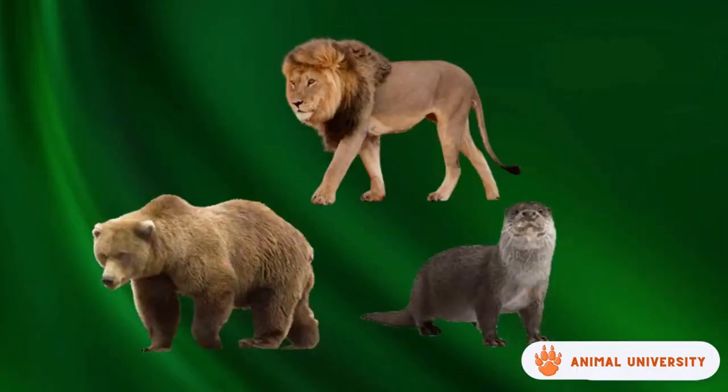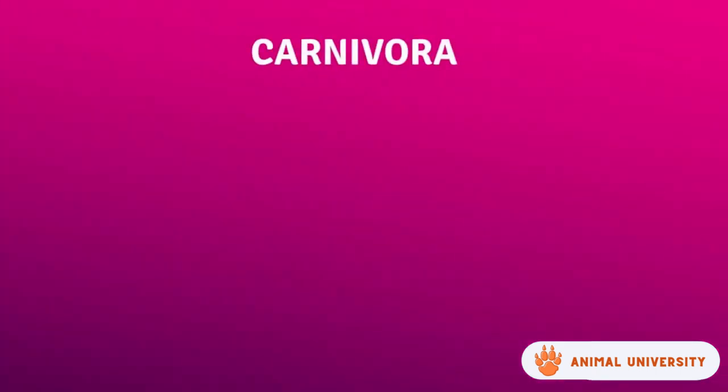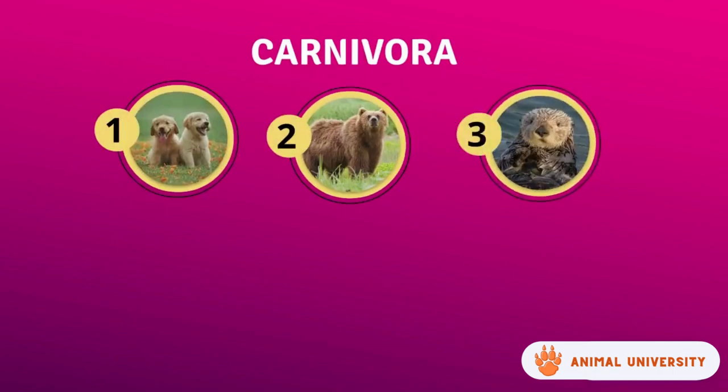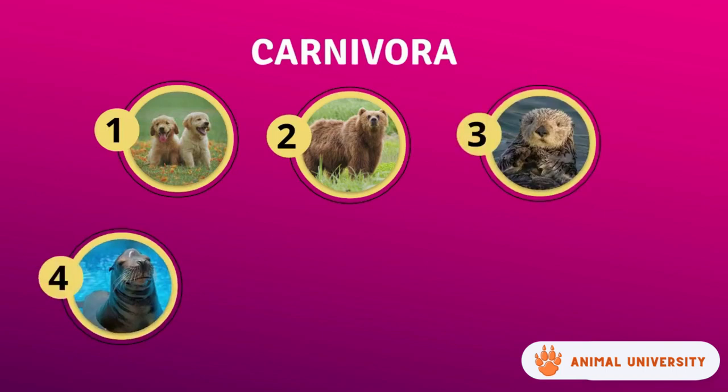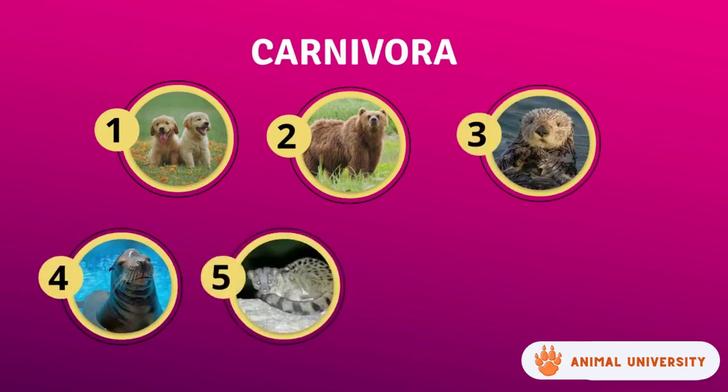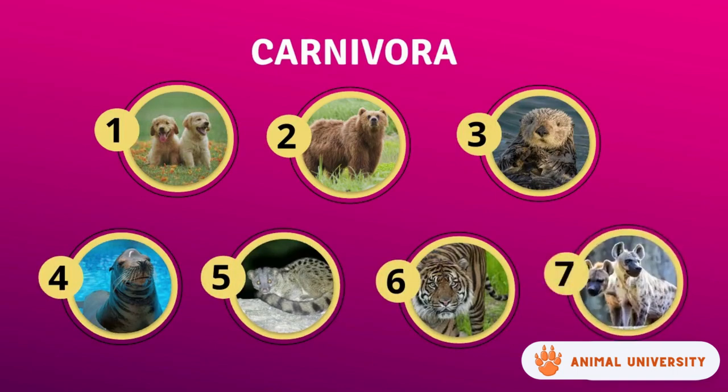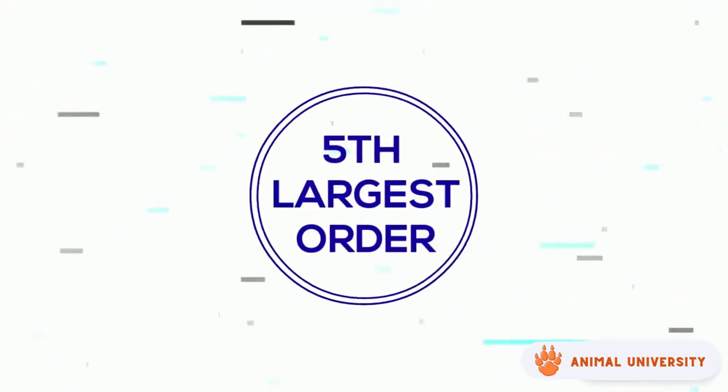Carnivora contains many well-known carnivorous mammals. They are divided into seven groups: Canidae which includes dogs, Ursidae or bears, Mustelidae which includes mustelids, Pinnipedia which includes seals, Felidae which includes cats, Viverridae and lastly Herpestidae which includes hyenas, mongooses, and viverrines.